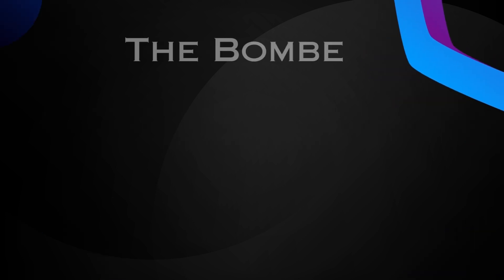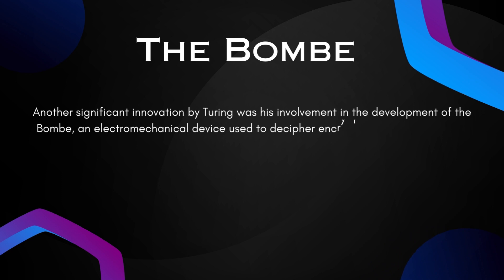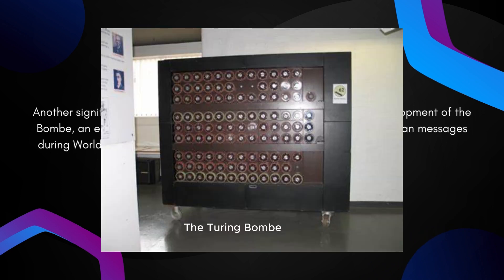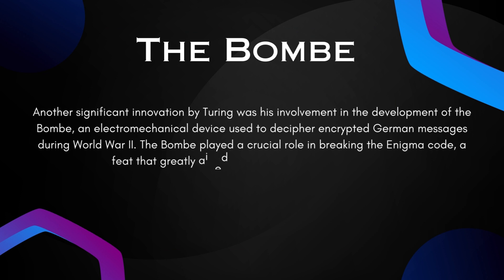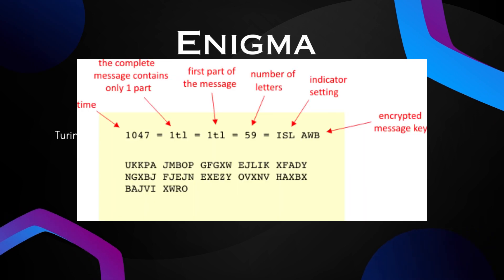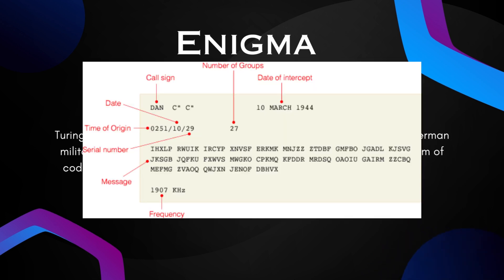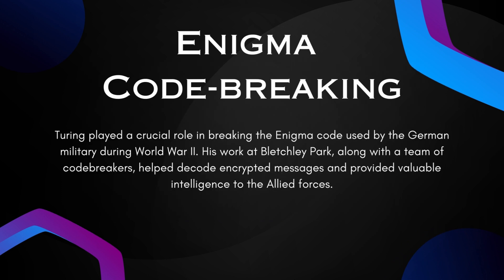The Bombe: another significant innovation by Turing was his involvement in the development of the Bombe, an electromechanical device used to decipher encrypted German messages during World War II. The Bombe played a crucial role in breaking the Enigma code, a feat that greatly aided the Allied forces. Turing also played a crucial role at Bletchley Park, along with a team of codebreakers, helping decode encrypted messages and providing valuable intelligence to the Allied forces.